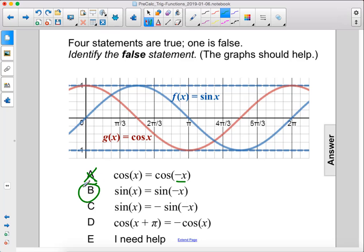However, it is not true for sine. The sine wave goes through the origin like this, and if you reflect it across the y-axis, it is now gonna go through like that.